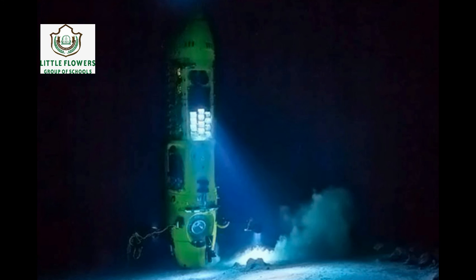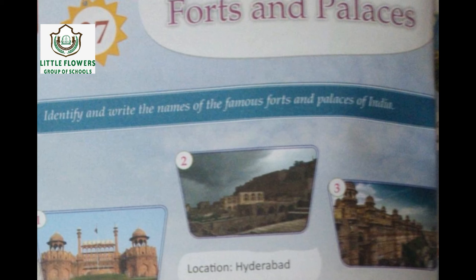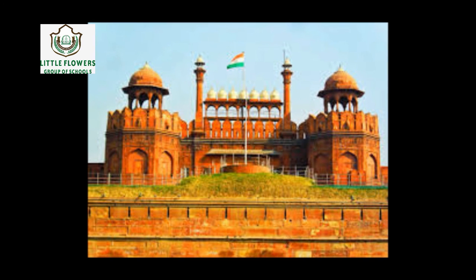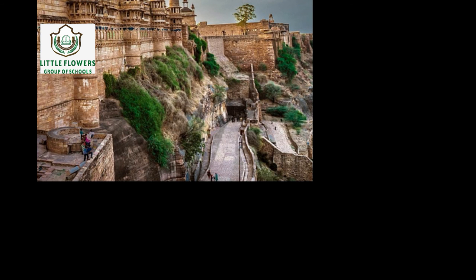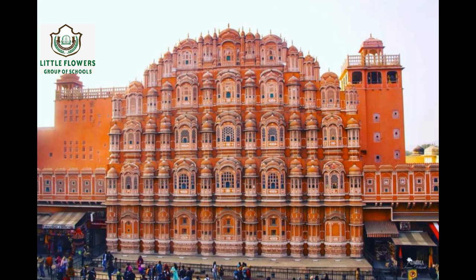Coming to Exercise 27: Forts and Palaces. Images are shown to you and you have to identify the name of the palace or fort. Number one: it is located in New Delhi. The answer is Red Fort. Number two: it is located in Hyderabad. The answer is the famous Golconda Fort.